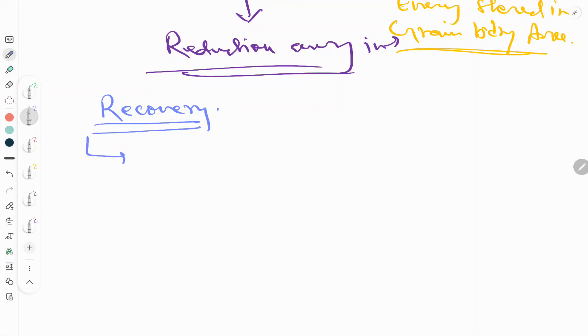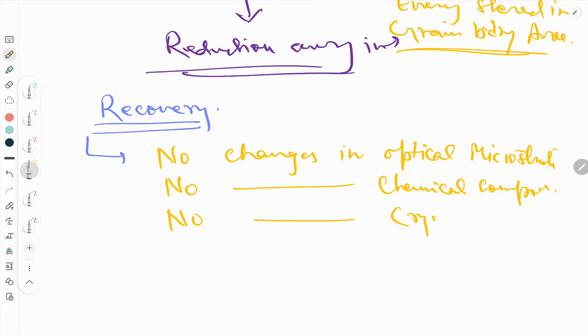What are the kind of changes that happen in case of recovery, or when the recovery process takes place? First, no changes in optical microstructure. Second, no changes in chemical composition of a material. Third, no changes in crystal structure.